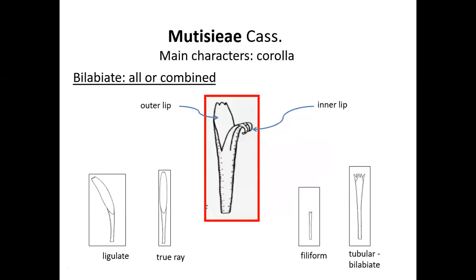Regarding the diagnostic characters, we find again bilabiate corollas with the typical inner lip and outer lip. In the case of Mutisieae, all the florets of the capitulum could be bilabiate, or in general they are combined with other types of corollas — ligulate corollas, true ray, filiform, or tubular bilabiate.